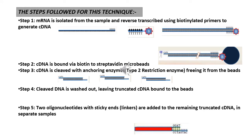The first step is where mRNA is isolated from the sample — the tissue we would like to research on — and then it is reverse transcribed using biotinylated primers to generate cDNA. Reverse transcription is where mRNA gives rise to a DNA called complementary DNA (cDNA), and this happens with the help of primers to which a biotin molecule is added. In the second step, the cDNA is bound via biotin to streptavidin microbeads.